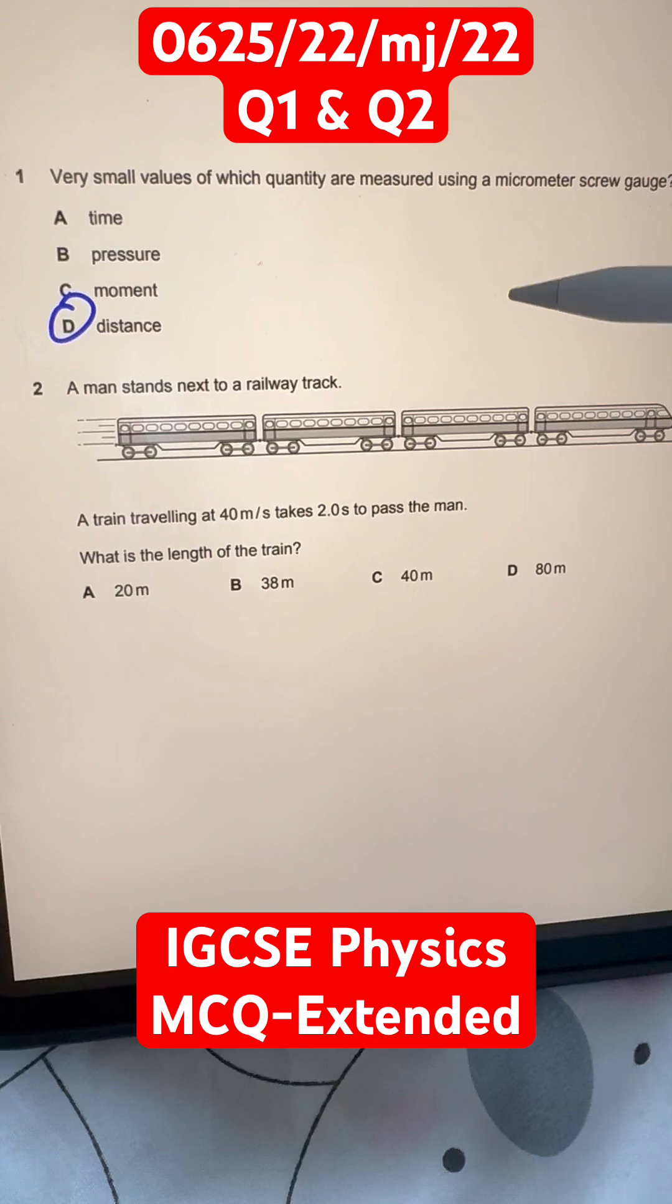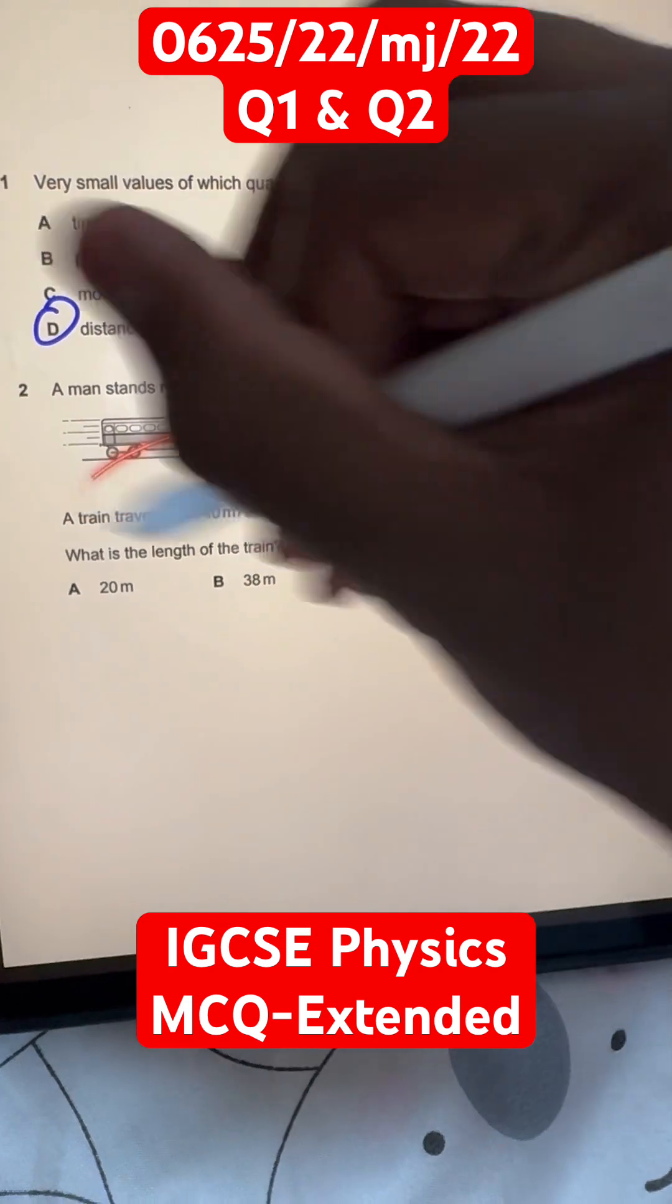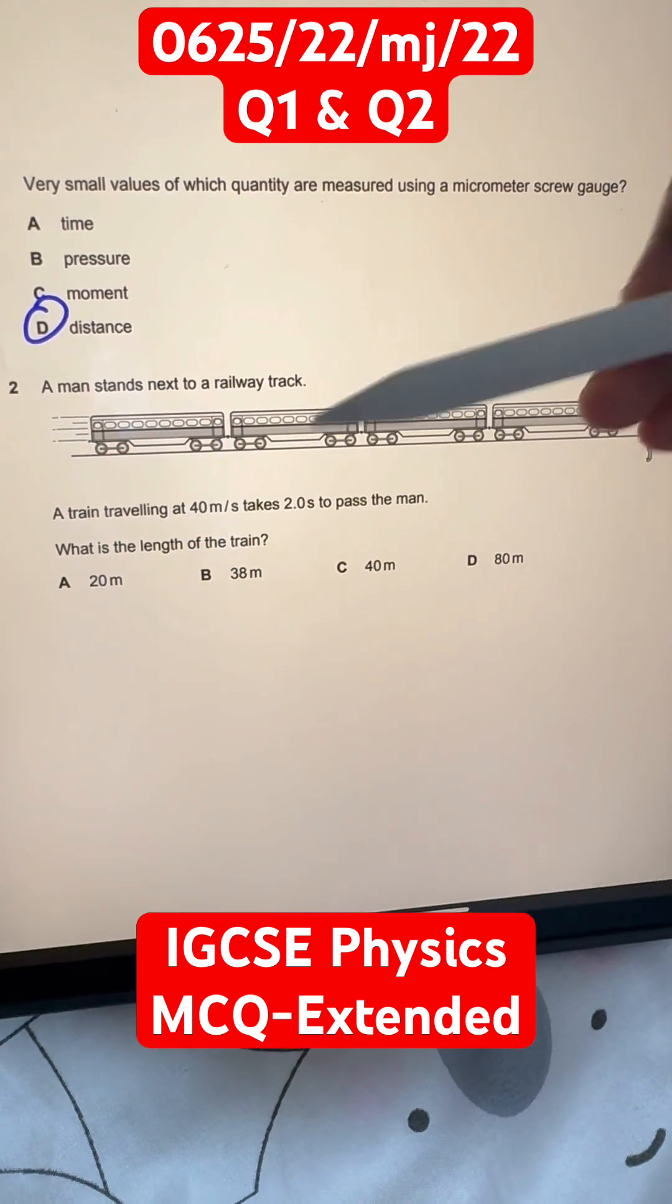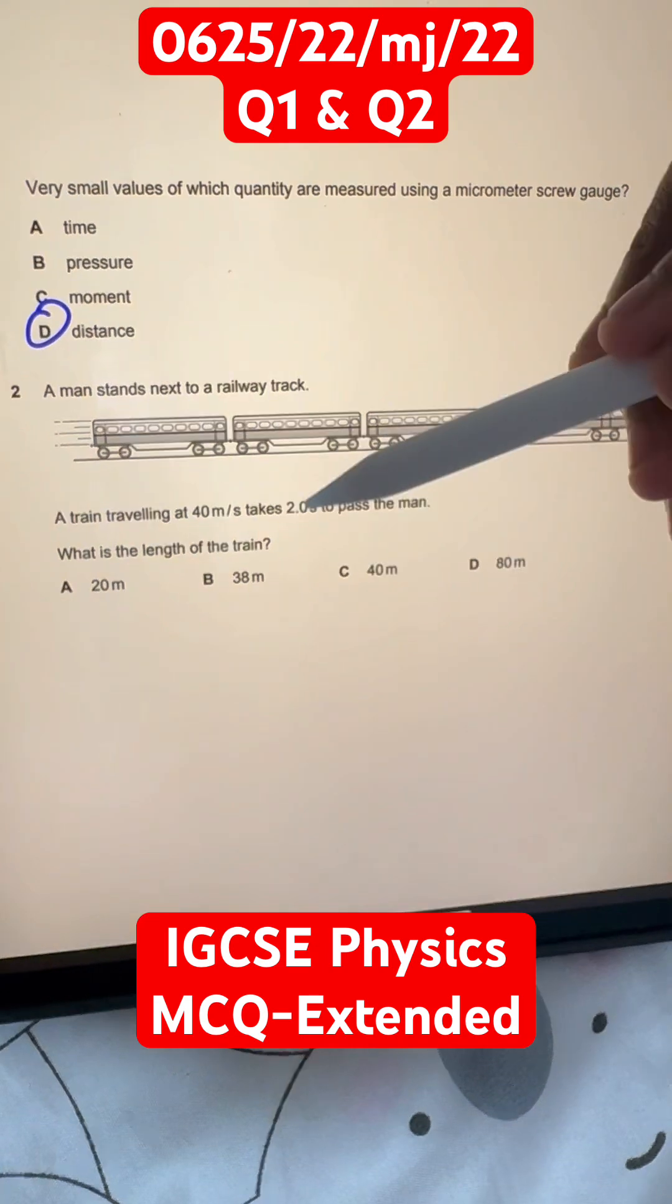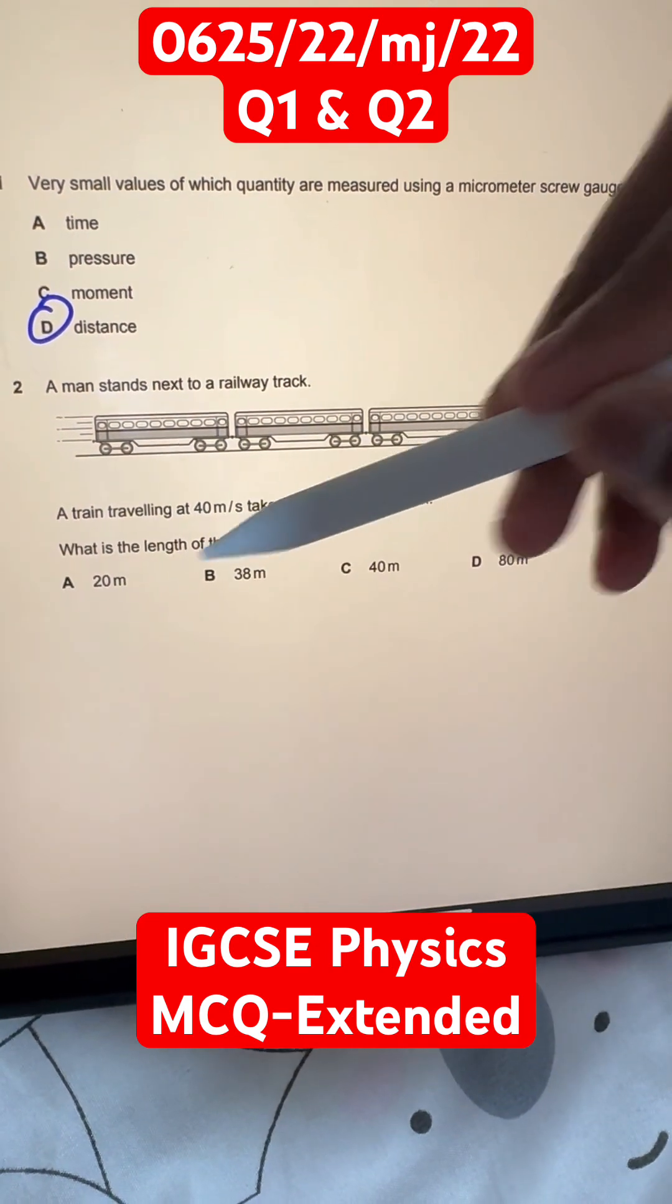Now, for question 2. A man stands next to a railway track, as given here. A train is traveling at 40 meters per second, and it takes two seconds to pass the man. What's the length of the train?